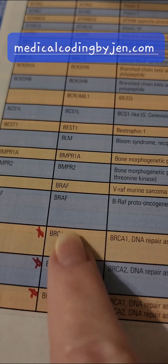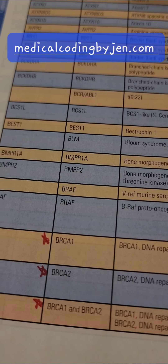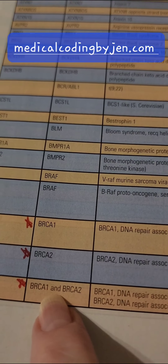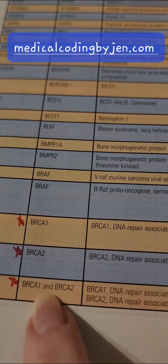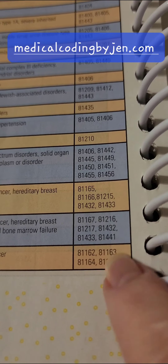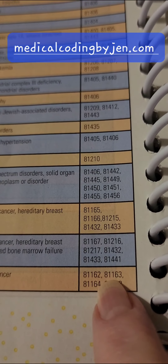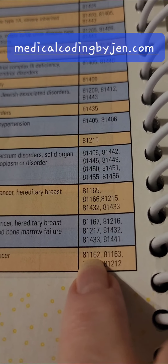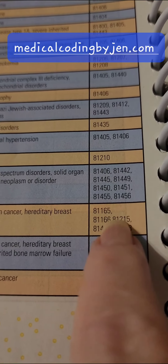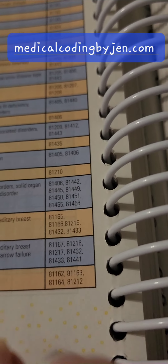If your exam question says they ordered just test number one, or they did number two, or if they did the combo and did both at the same time, your answer is right there in that last column. This is especially helpful when some CPT code descriptors say they can't be used together when you're back in the section where the actual numbers are.